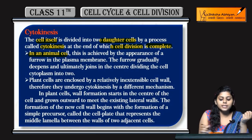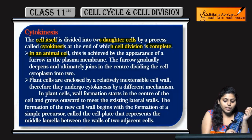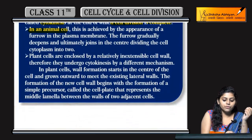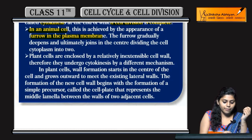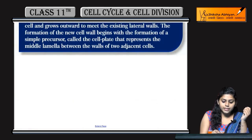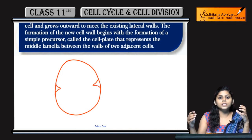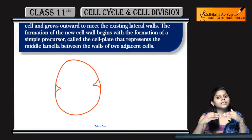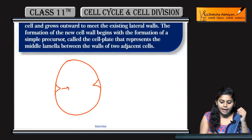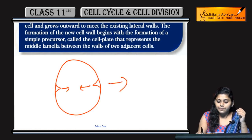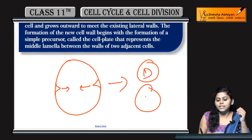In animal cells, what happens? This is achieved by a furrow in the plasma membrane. The animal cell division is made by a furrow. The wall is formed by a furrow, and then the cytoplasm divides and two daughter cells will be made.